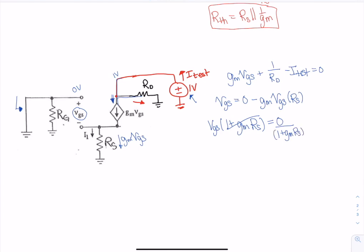And then I'm going to divide that zero by this number, and that's still going to be zero, so vgs in this case gives me zero. And so i_test is going to just be one over rd.